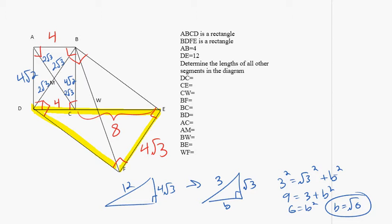So I got the square root of 6 for this small version of the triangle. But this triangle is 1 fourth the size of this bigger triangle. So this is going to be 4 root 6.